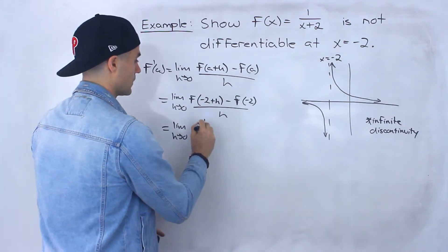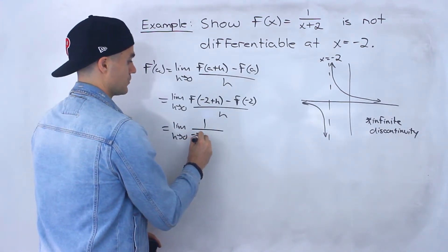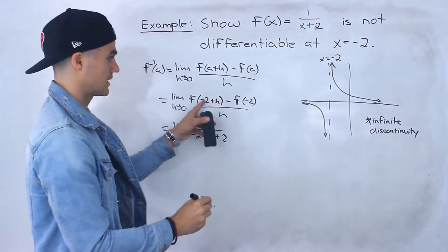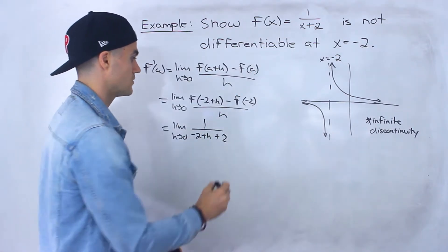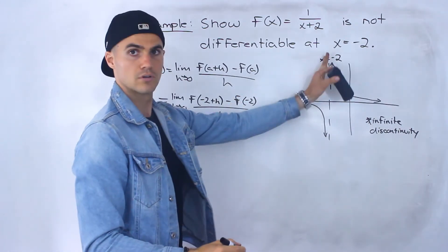If we plug it in for the x value we'll have 1 over negative 2 plus h plus 2. We plugged in negative 2 plus h for this x value, but then notice this f of negative 2 undefined.